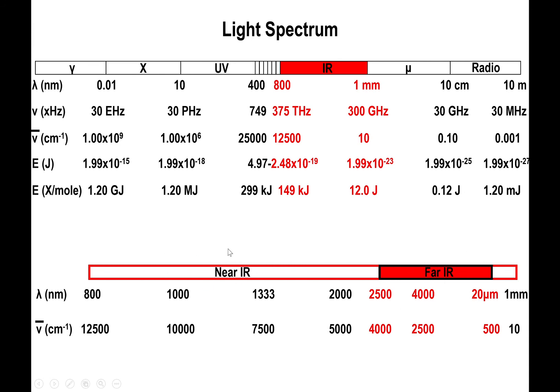You also have the near infrared region that can be of use for other purposes, but in this class we're not going to focus on the near IR. We'll focus on the far IR — 500 to 4000 inverse centimeters — and we'll stick to the wave number denomination. It makes the numbers a little bit simpler, and it's just historical in nature that we stick to inverse centimeters for infrared spectroscopy.